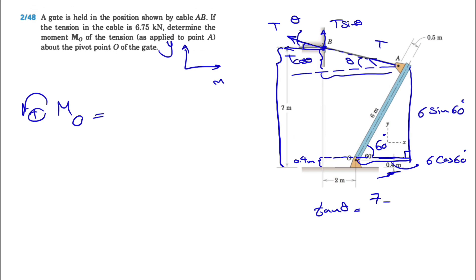To find this side, we have 7 minus 6 sine 60 degrees minus that little distance 0.4, over - we need to figure out this distance, which is 6 cosine 60 degrees plus what we have from here to here, which is 2.